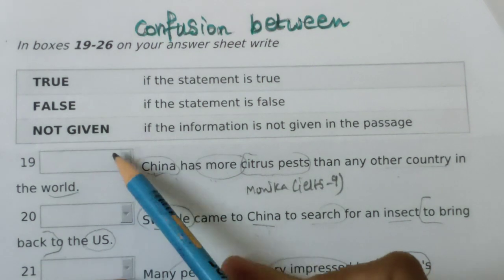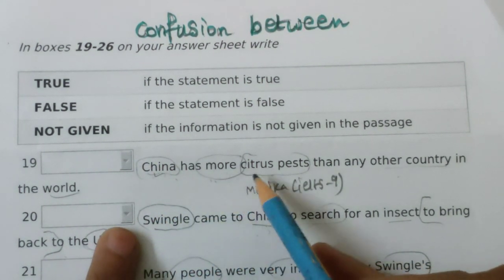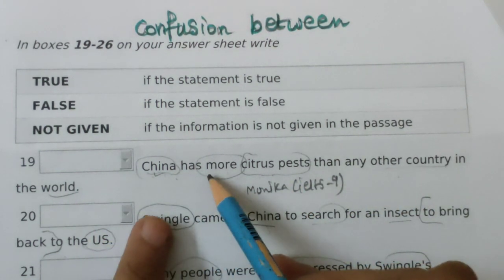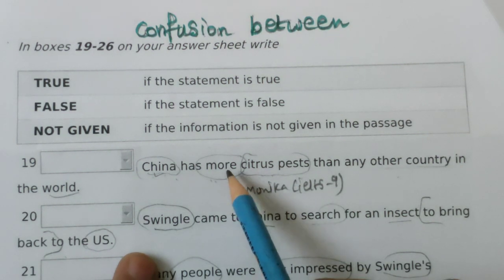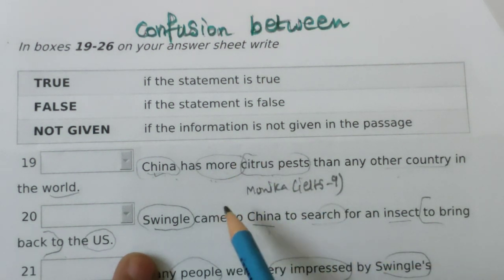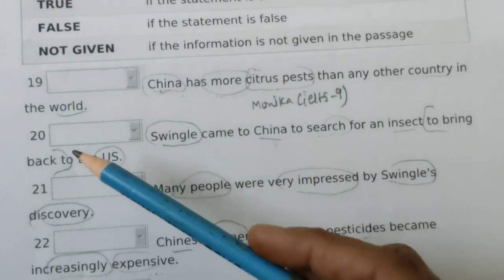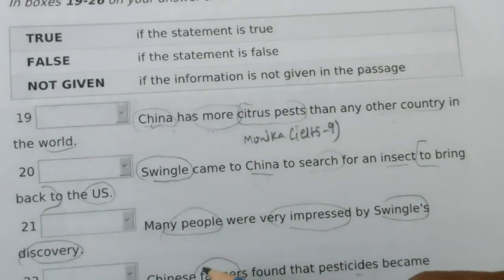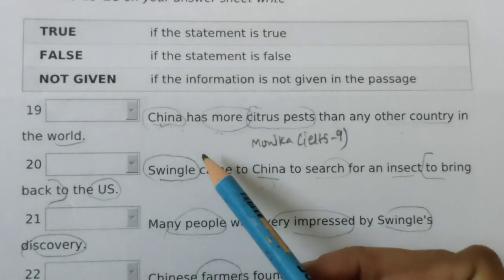We will try to solve this problem here. The question statement is: 'China has more citrus pest than any other country in the world.' I have already shown the location of this question statement. This is the second type of question, and since question numbers 19 to 26 are there, we can't get all locations within the last three paragraphs.